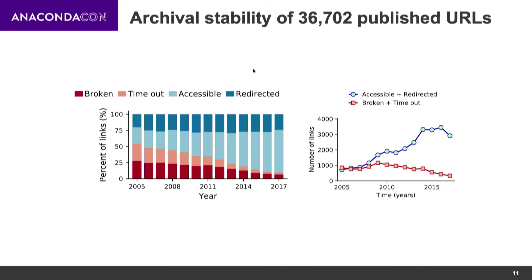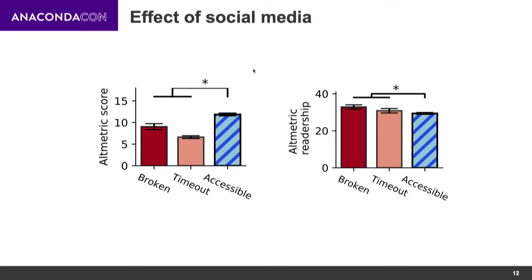Looking at absolute numbers on the plot, even in recent years there are quite many tools with broken links. We see that if there is significantly more social media attention on your link, it will probably be maintained — we hypothesize that the pressure of people commenting or attention on Twitter keeps that link working rather than letting it die.